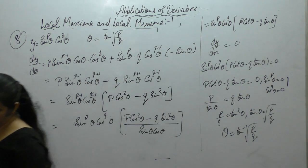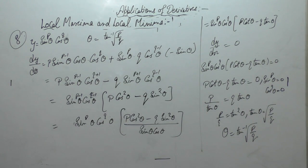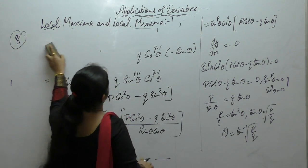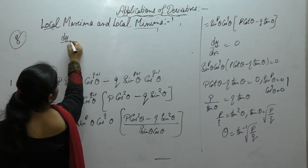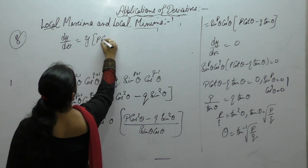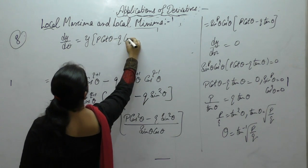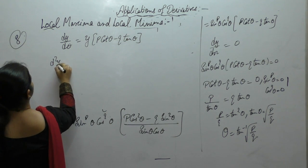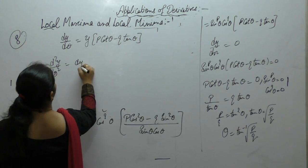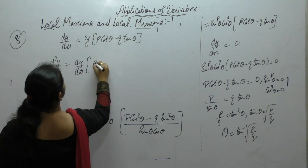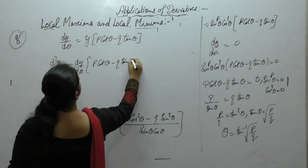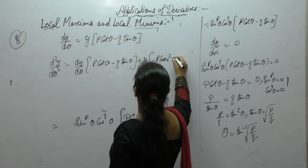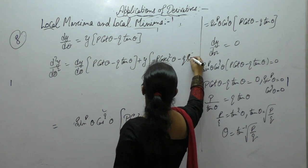Now we get this value. Now find a second derivative. derivative of dy upon d theta is y into p cot theta minus q tan theta. Now find a second derivative. derivative of y, this function as it is. Plus y as it is. Derivative of cot is cosec square minus, and tan is sec square.